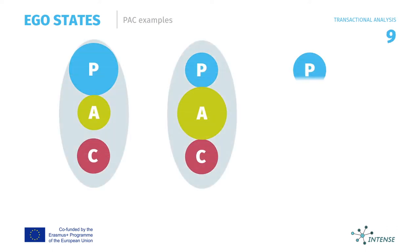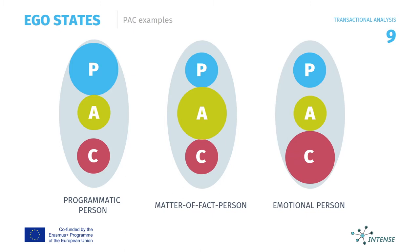There are different characters which have different tendencies towards certain ego states. A person with a strong tendency to the parental ego state can be characterized as programmatically oriented — used to giving orders to others or being mostly critical. If the adult ego is more dominant, the person can be characterized as a matter-of-fact person, such as astrophysicists, for example. A person with a strong tendency to the child ego state can be called an emotional person — typically, comedians are rather emotional than one of the other mentioned characteristics.